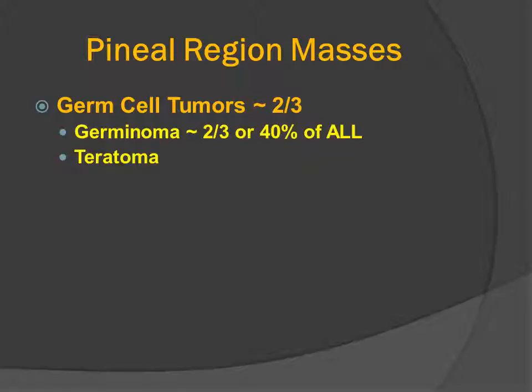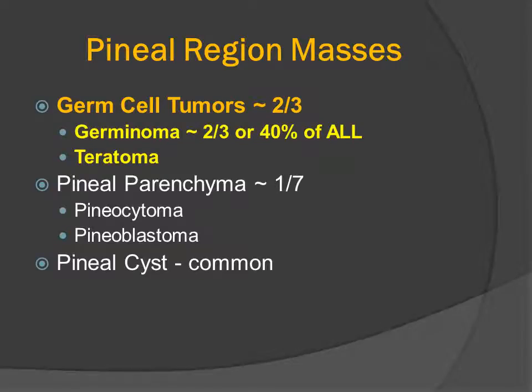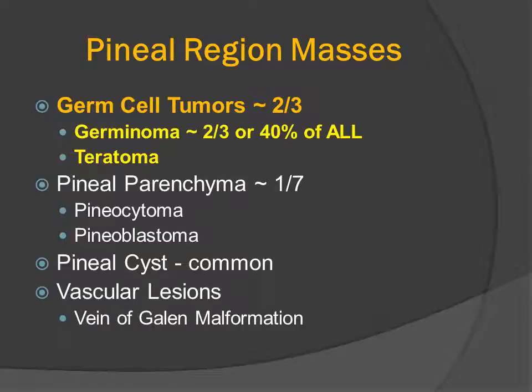The majority of germ cell tumors are going to be the germinoma histology, also known as atypical teratoma and dysgerminoma. Approximately one-third of the germ cell tumors will be intracranial teratomas. Almost one out of seven pineal region masses will arise from the pineal parenchyma itself. Pineal cysts are very common, but they are not neoplastic.